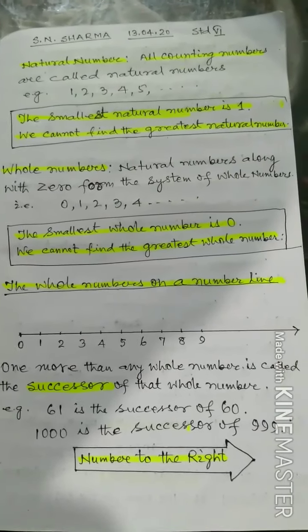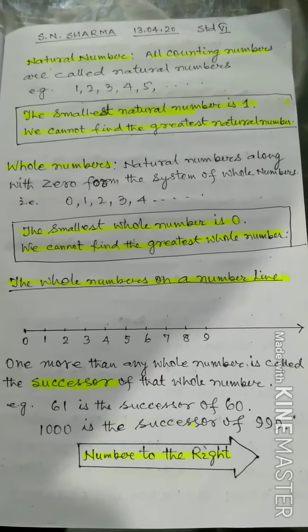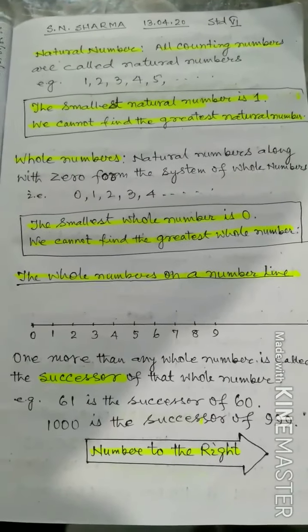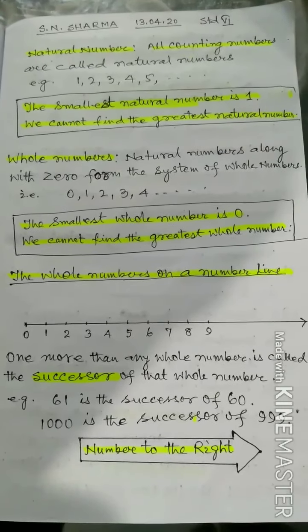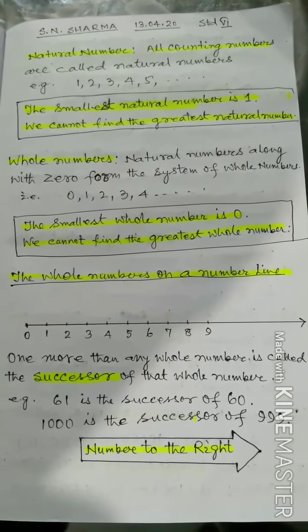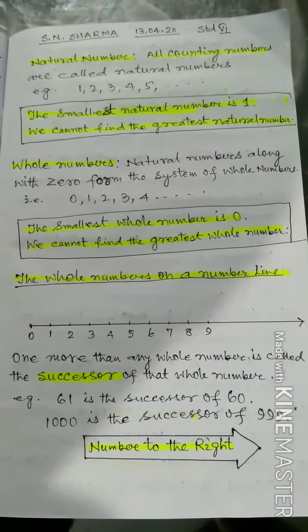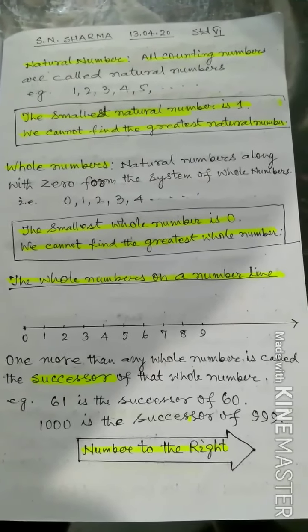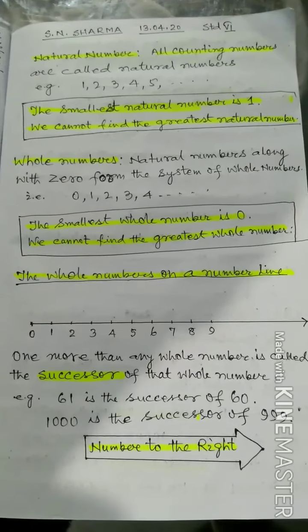Now whole numbers. Natural numbers together with zero form the system of whole numbers. That is 0, 1, 2, 3, 4, and so on. Now, the smallest whole number is 0.